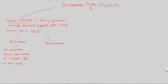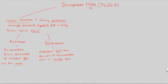In deuterostomes, it's a little different. Here, the mesoderm buds from the wall of the archenteron, and its cavity becomes the coelom. Look at figure 32.2 to see this process better. The archenteron plays a big role in both cases because coelom formation occurs during gastrulation.